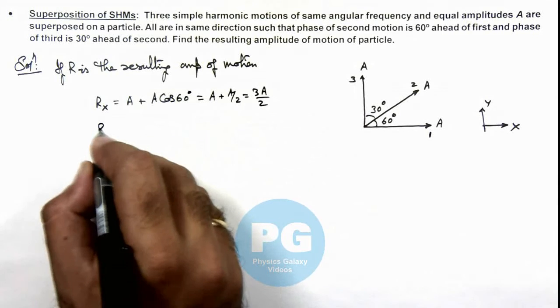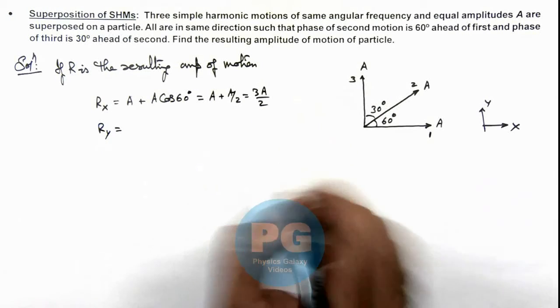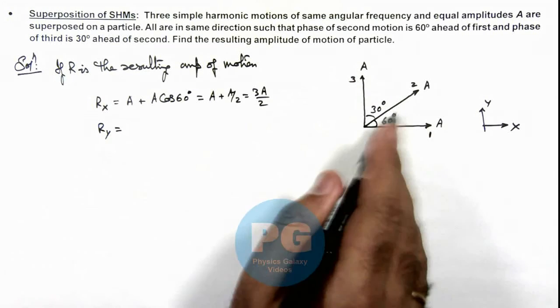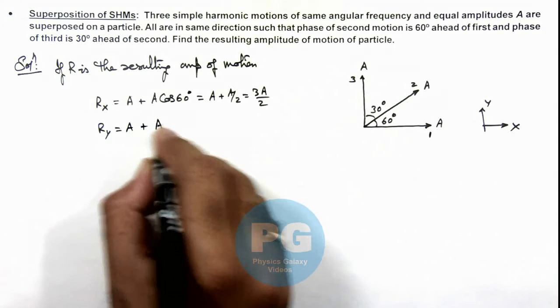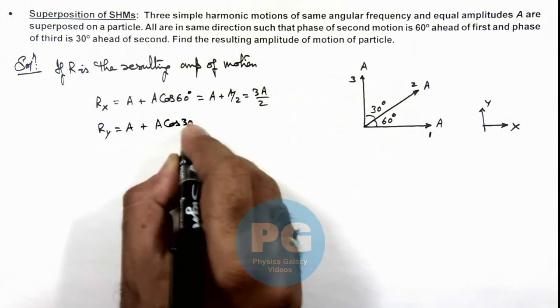Similarly, the y component of the resulting motion amplitude or the vector sum component in y direction can be written as A plus A cos 30 degree or sine 60 degree.